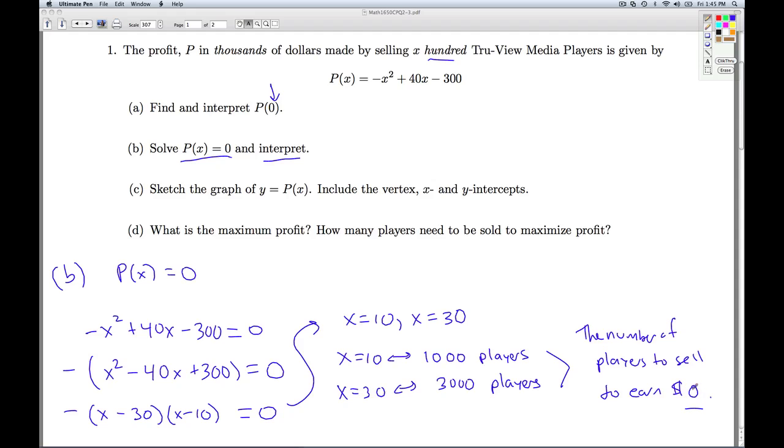So why the heck would those numbers be important? Well, we know that we have an initial fixed cost, startup cost here of $300,000. In order to recoup that cost, it's saying we need to sell at least 1,000 players to do so. So sometimes these are called the break-even points. Geometrically, what they mean is we have X intercepts at X equals 10 and X equals 30. So that leads us nicely then into part C.